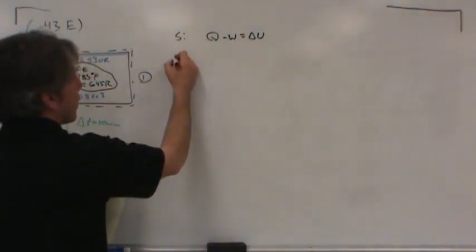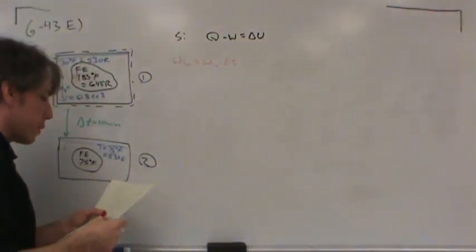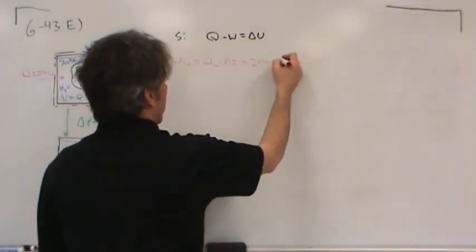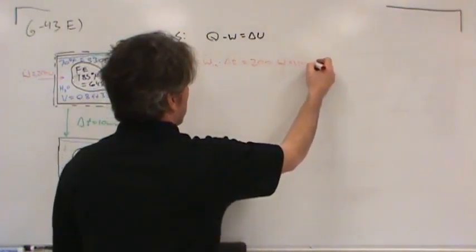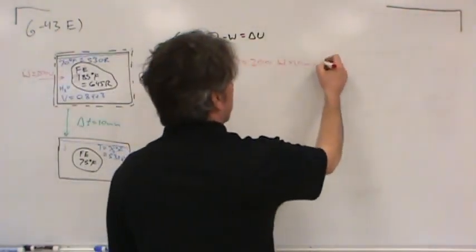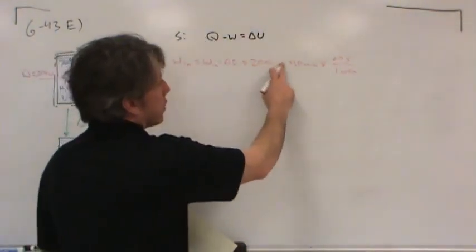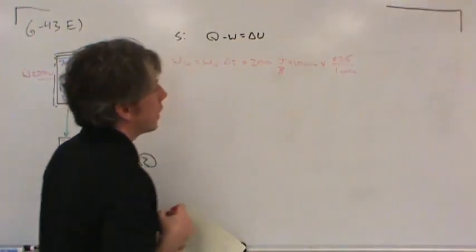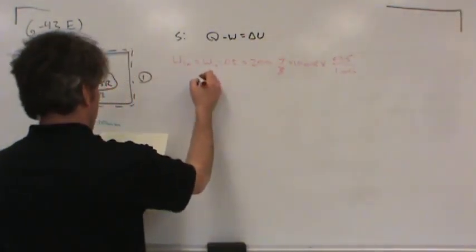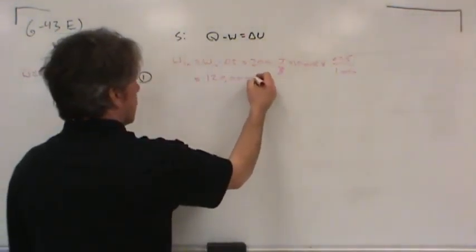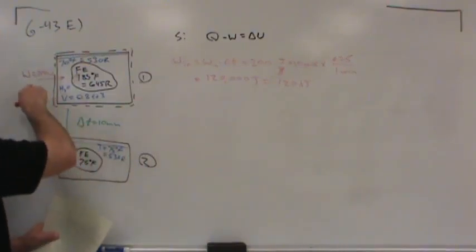The total amount of work that flows in is the power flow rate multiplied by the time: 200 watts times 10 minutes times 60 seconds per minute. Since a watt is a joule per second, the seconds cancel and we get joules. This gives 120,000 joules, which is 120 kilojoules of energy input.